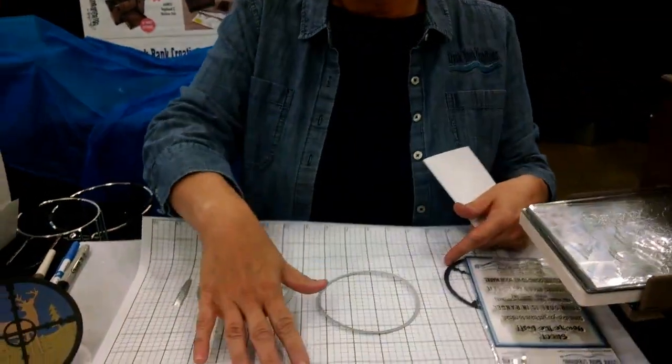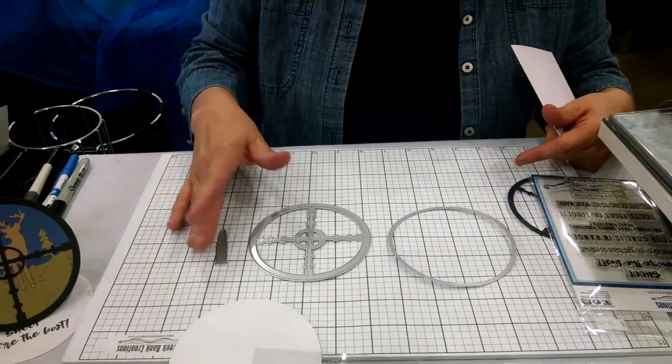Now this is a three die set, so we have the circle die, we have the crosshair die, and we have the bullet die.